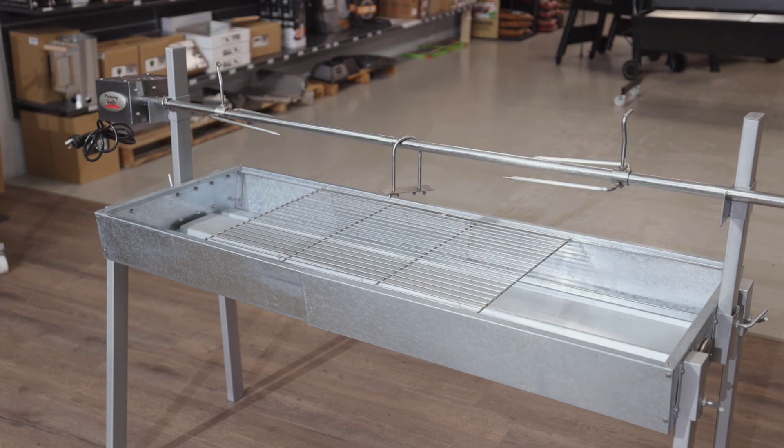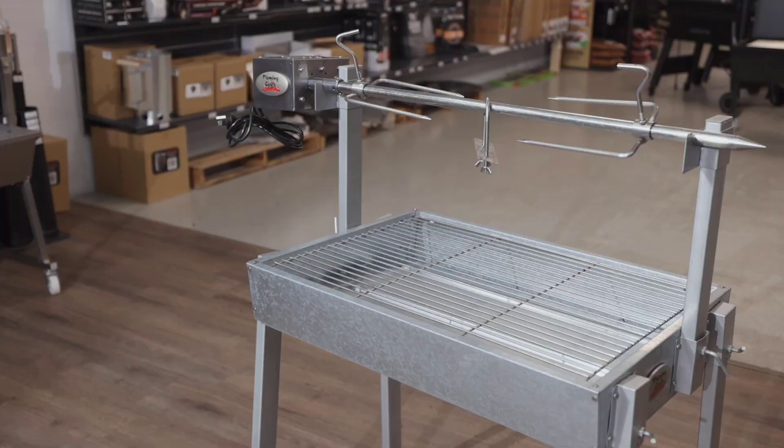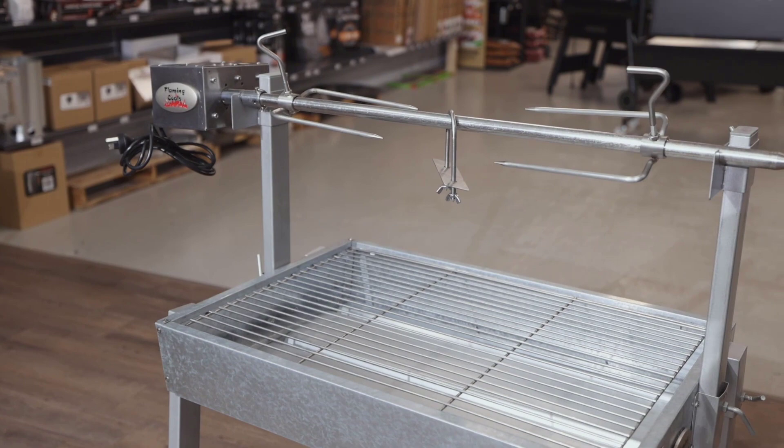The rotisserie comes with a two-piece skewer which extends depending on whether you're cooking in its compact or full form. Two large prongs, one back brace and a cooking grill.